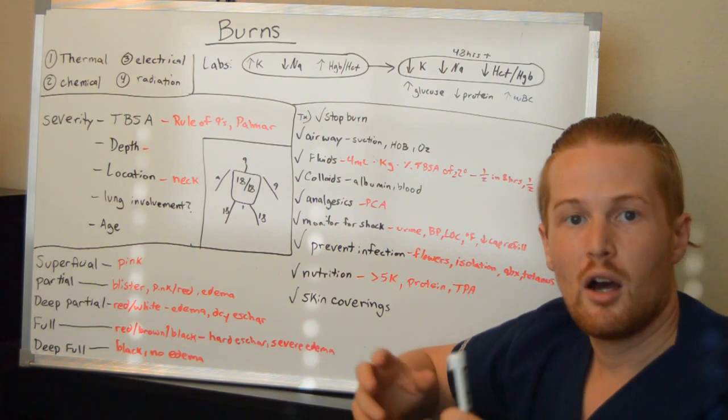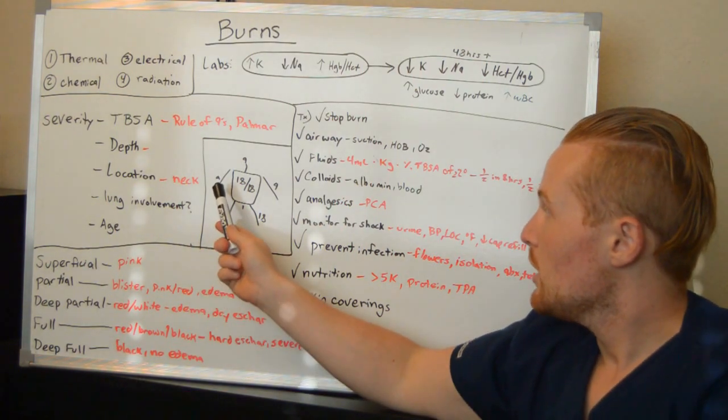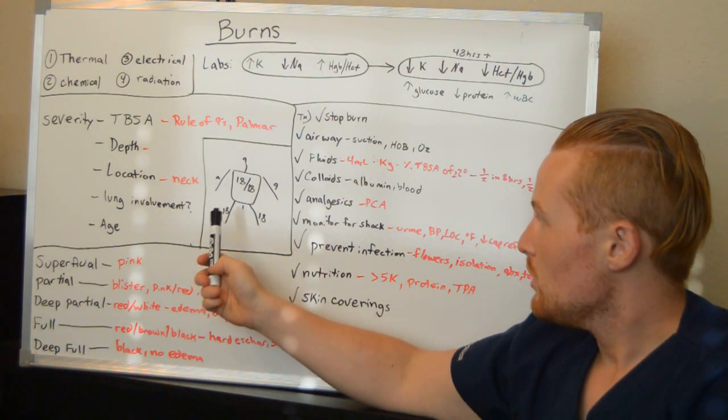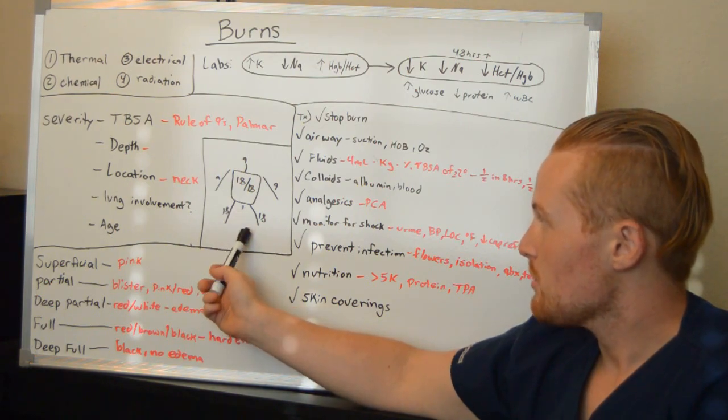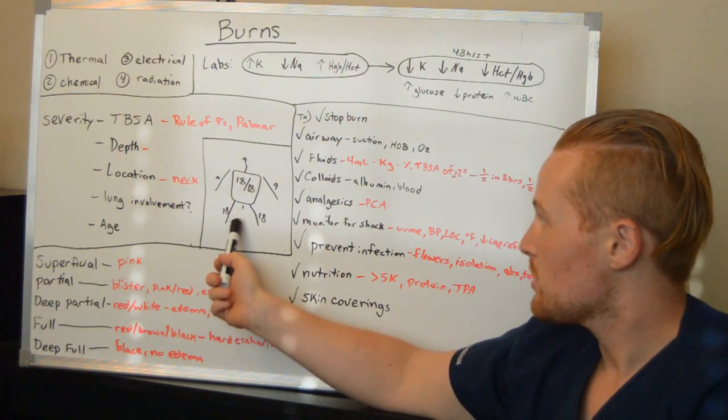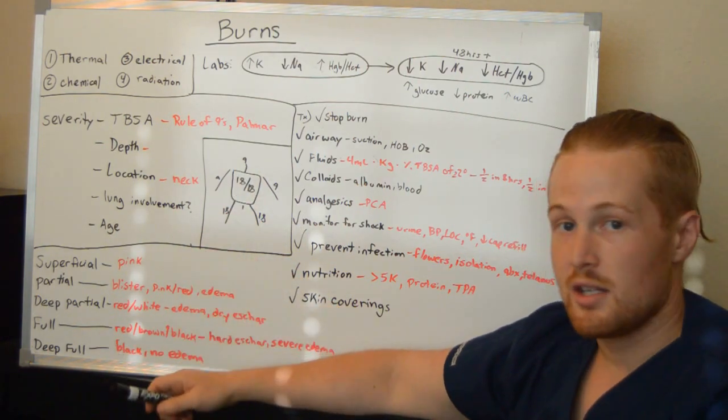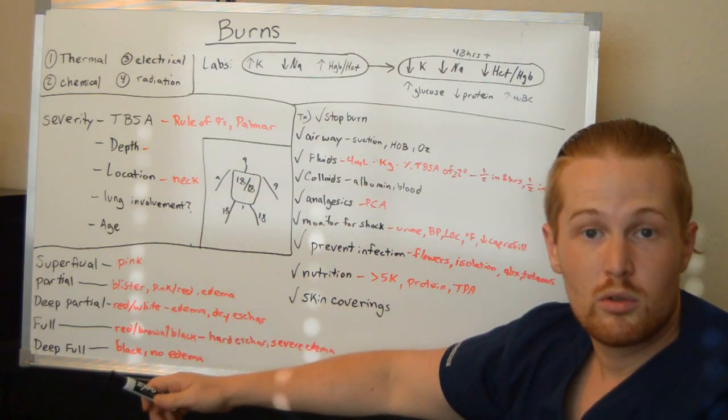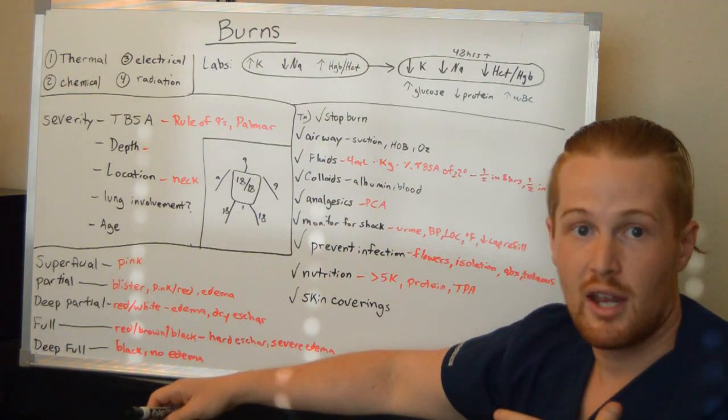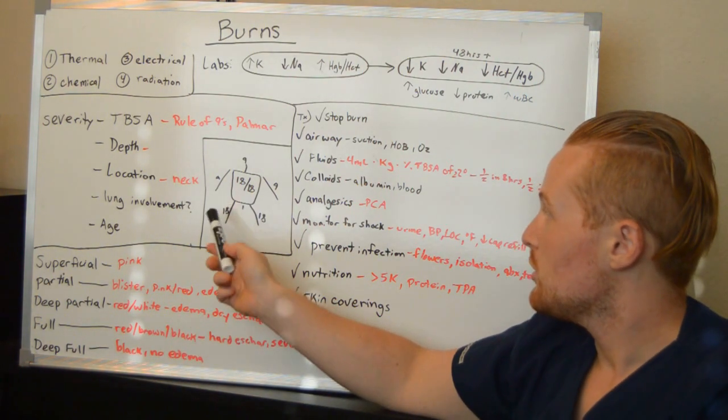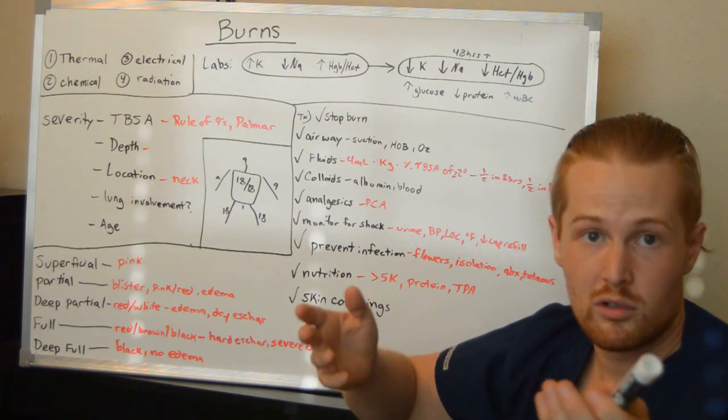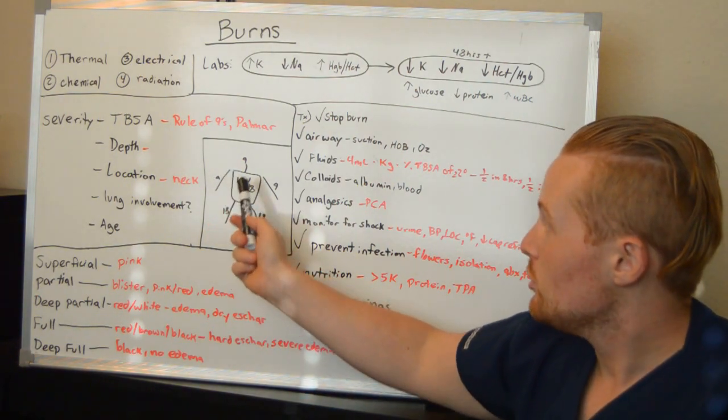And what this is, is you break the body parts up into groups of nine. And you can see here, each arm is 9%. The front of the legs is each 9%. And the back of the legs is each 9%. The head is 9%. Your chest is counted twice, so 18%. And your back is counted twice for 18%.